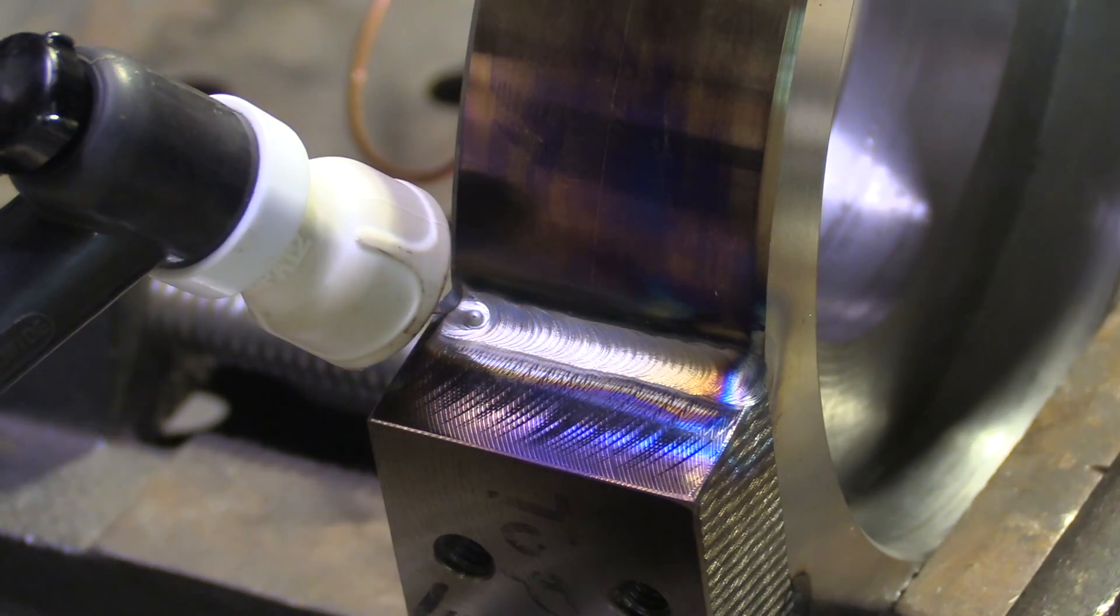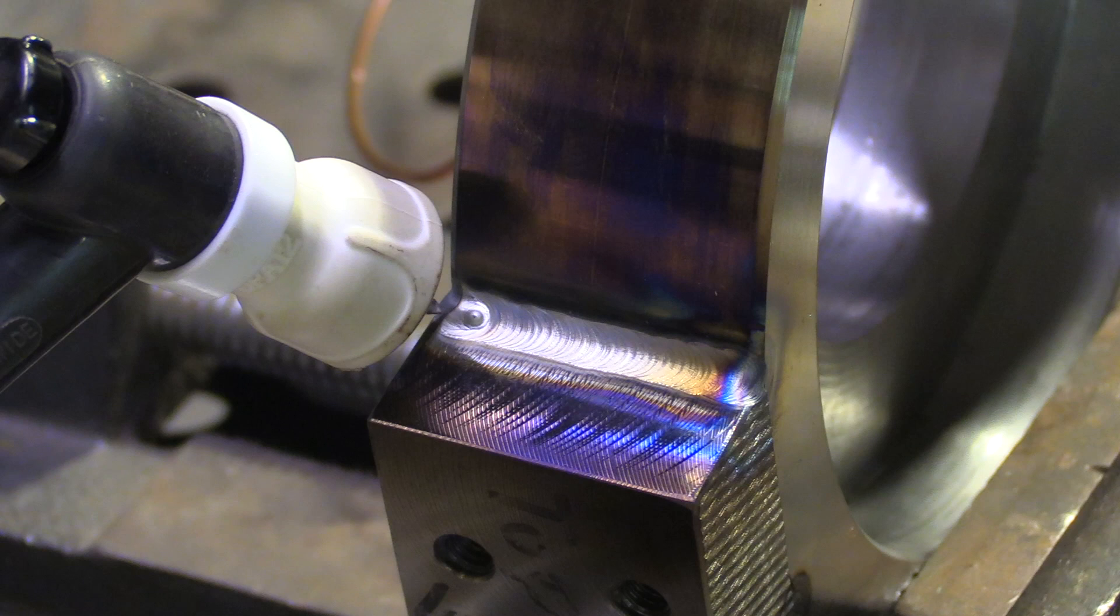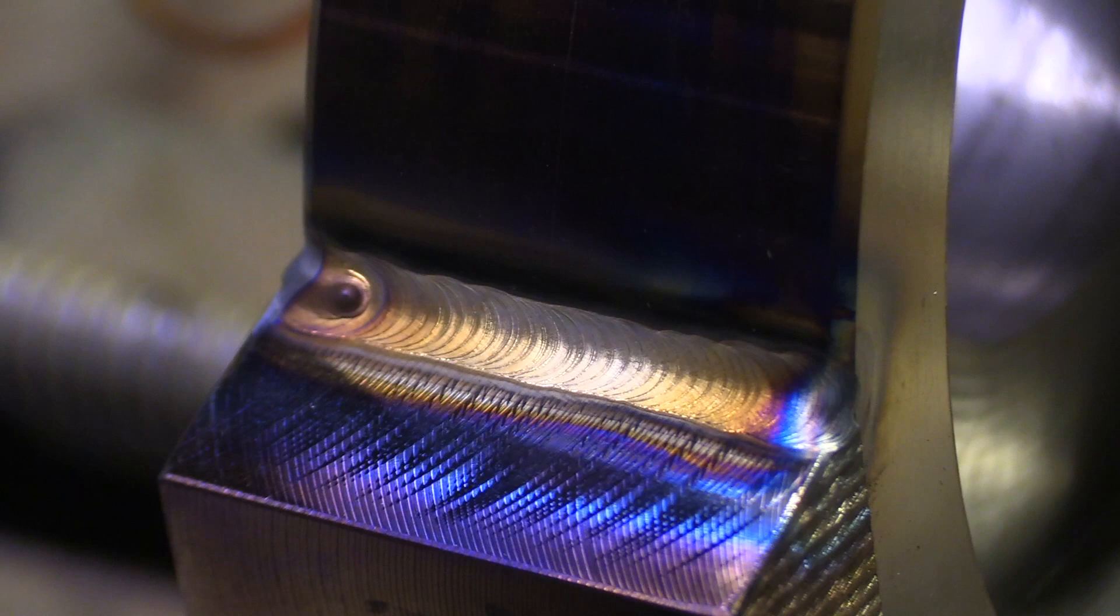I'm using a number 12 ceramic Furick cup with 25 CFH gas, and you can see it's doing a darn good job there of shielding.